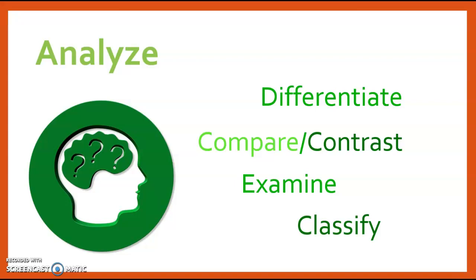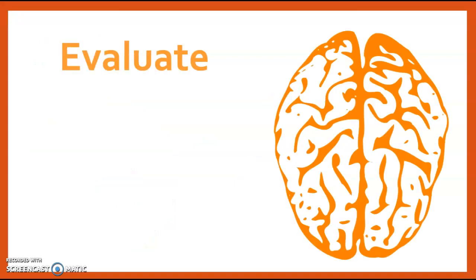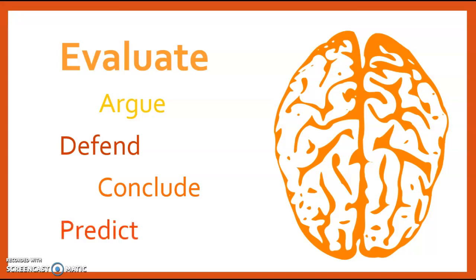So that is analyzing and evaluating is a point at which you can form an argument. So when you get to a point where you can form a hypothesis about something or a thesis statement about something, you can then defend that argument. You're able to make conclusions about things based on the information that you have. And you're able to then make predictions about what may occur in the future.